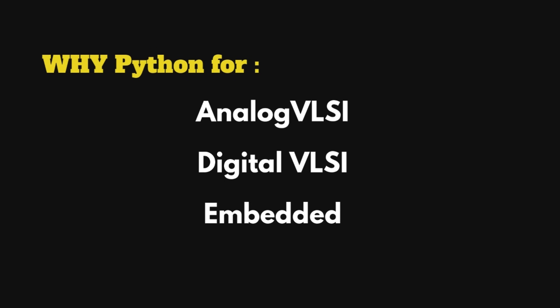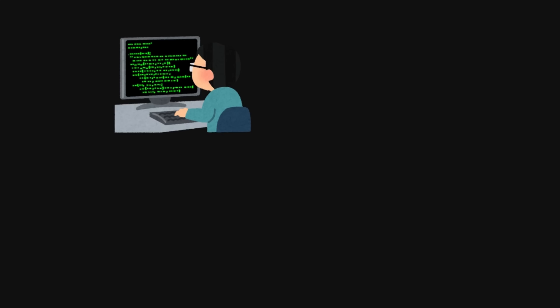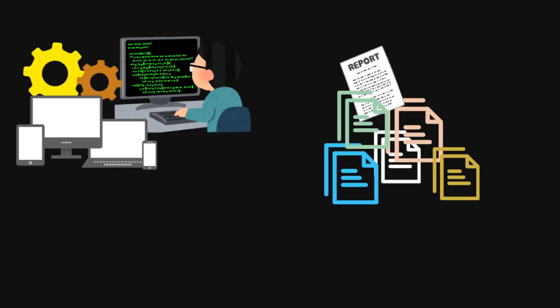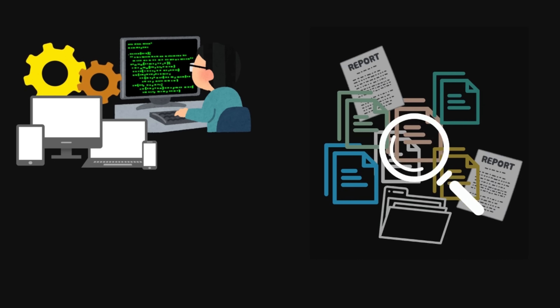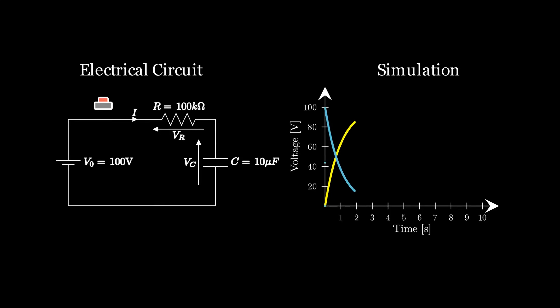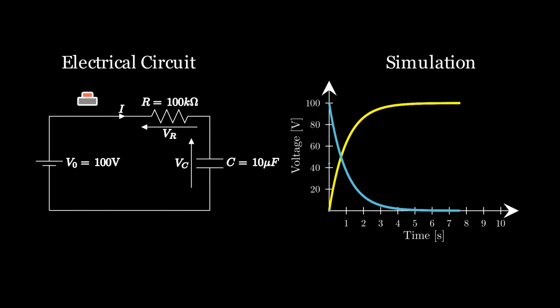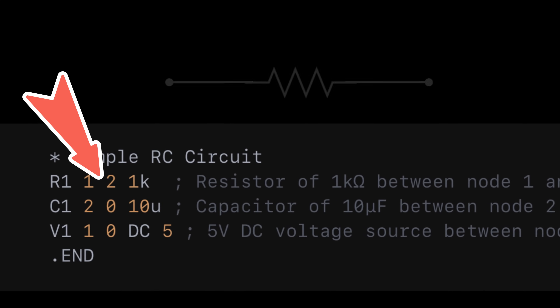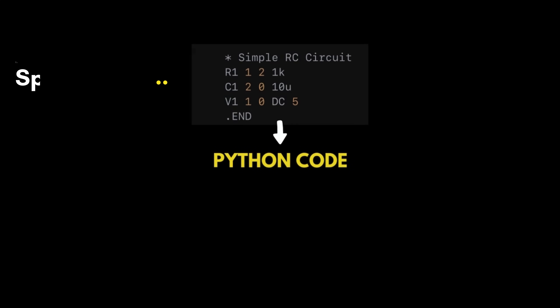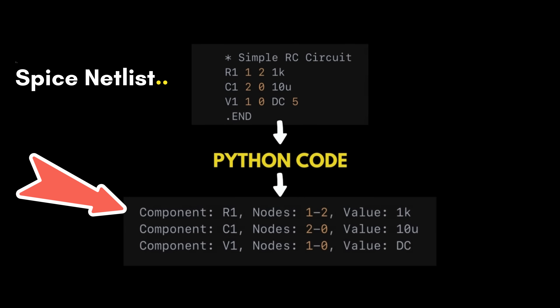As a VLSI or embedded engineer, you'll have a lot of experiments with many files, reports, and logs to analyze. A script that can process and sort data exactly the way you want lets you analyze results faster and more efficiently. In analog, Python can be used for mathematical modeling of circuits or systems, analyzing simulation results and plotting them. Python also helps in parsing netlists — a netlist is a text-based file showing the connectivity of a design — and Python can decode it into a readable form.